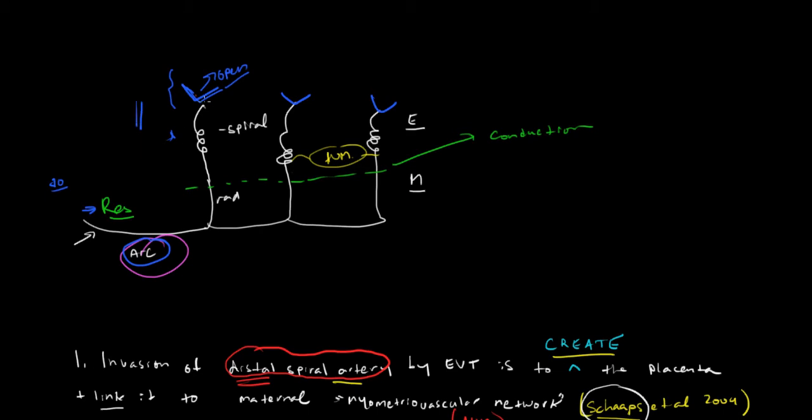This is a conduction system, not a high resistance system. The distal radial artery and spiral arteries have low resistances and high conduction. This could be likened to an open tap, and this part could be likened to the plumbing that conduits to the tap.